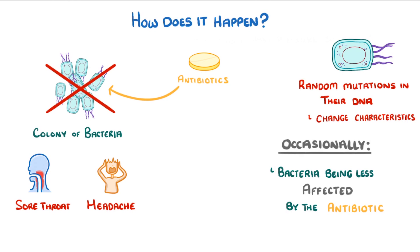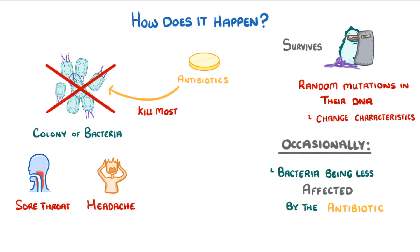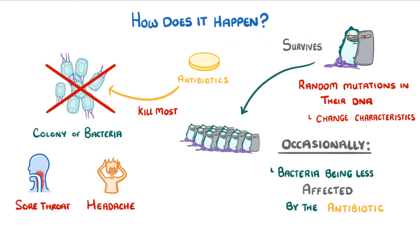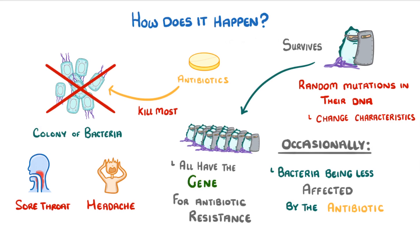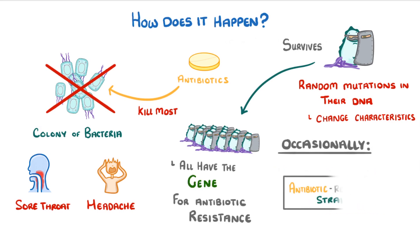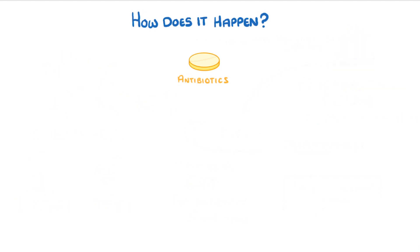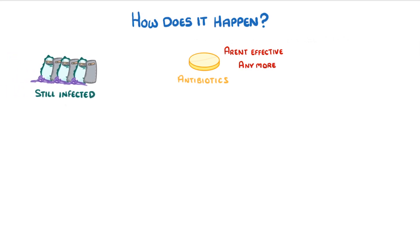Even though the antibiotic kills most of the bacteria, this resistant one survives. Because bacteria can replicate so quickly, and because there are no longer any other bacteria to compete with, the resistant bacteria quickly forms a new colony of its own — all with the gene for antibiotic resistance. We call this new type of bacteria an antibiotic-resistant strain.